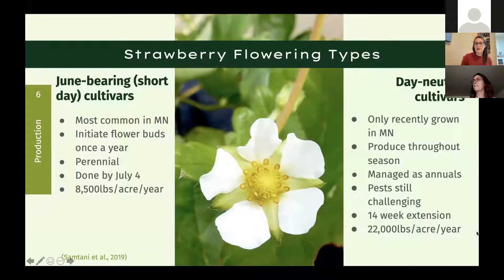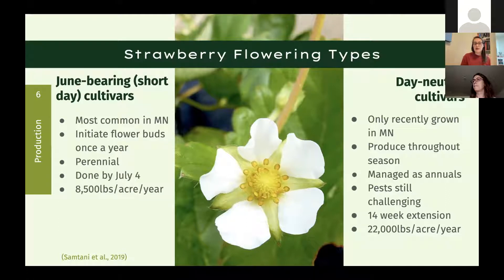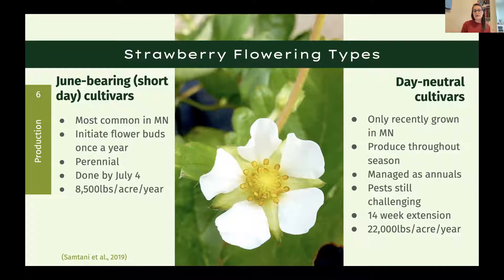There are three main types of strawberries: june bearing, day neutral, and ever bearing. Ever bearing cultivars aren't in widespread commercial production. June bearing cultivars are most commonly grown in Minnesota and the upper Midwest — they initiate flower buds once a year, overwinter them, and fruit in spring or early summer. They're perennials and cold tolerant but have a short harvest window — essentially done by the 4th of July in Minnesota — yielding about 8,500 pounds per acre per year.